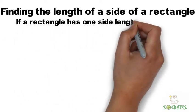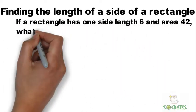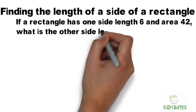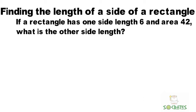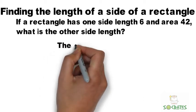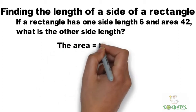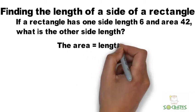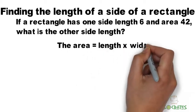Finding the length of a side of a rectangle. If a rectangle has one side which the length is six, and the area of 42, what is the other side length?